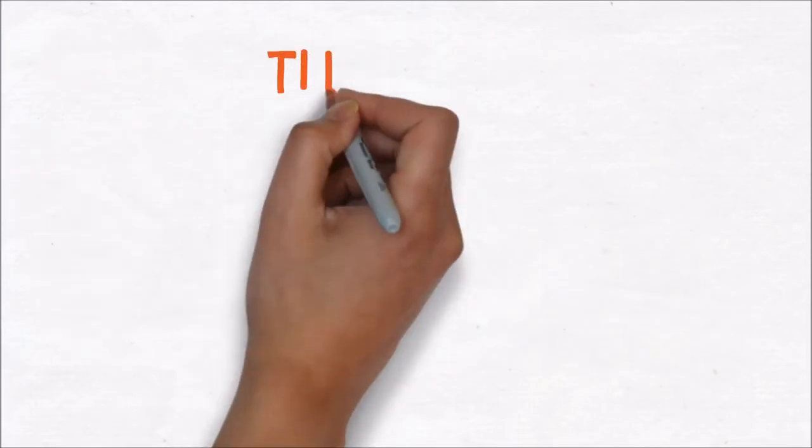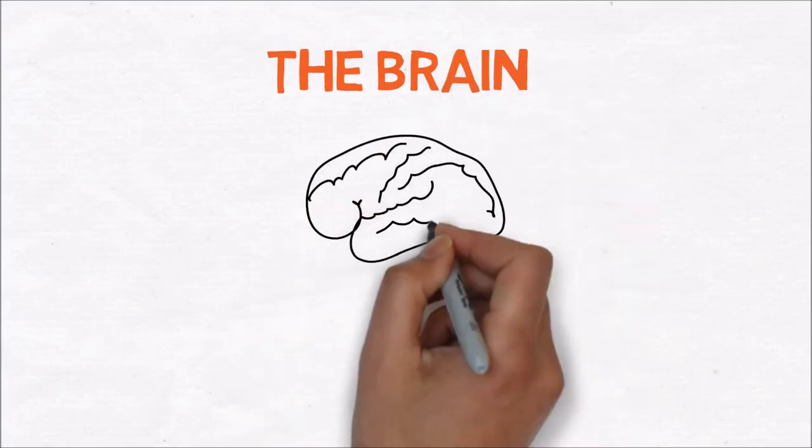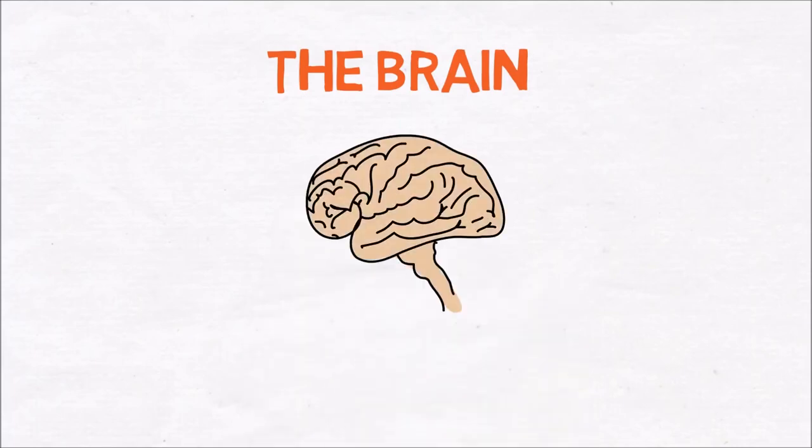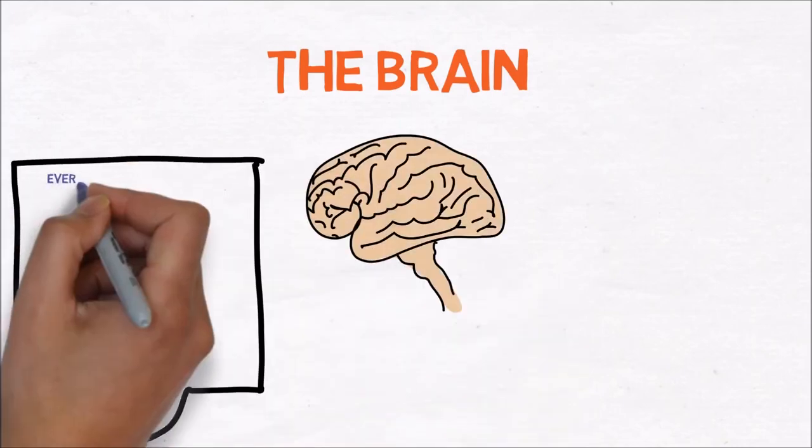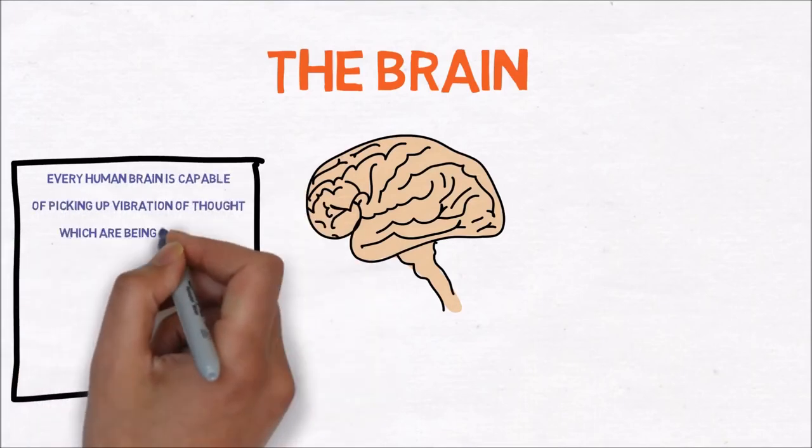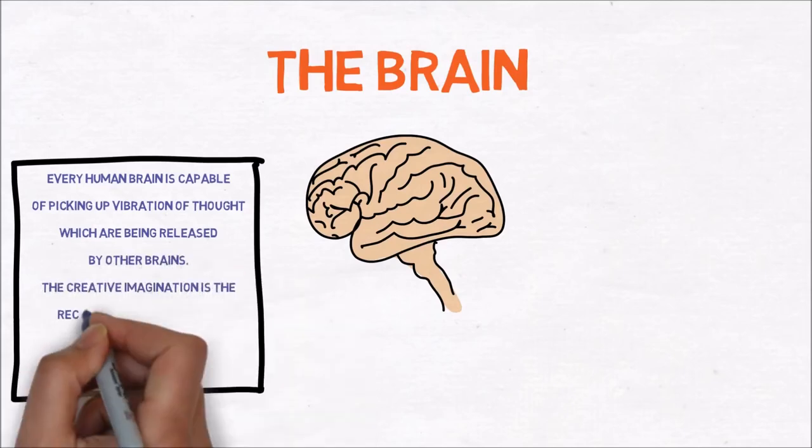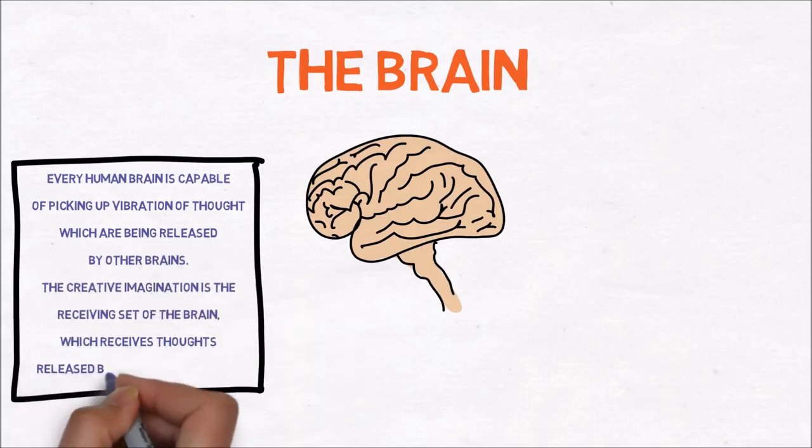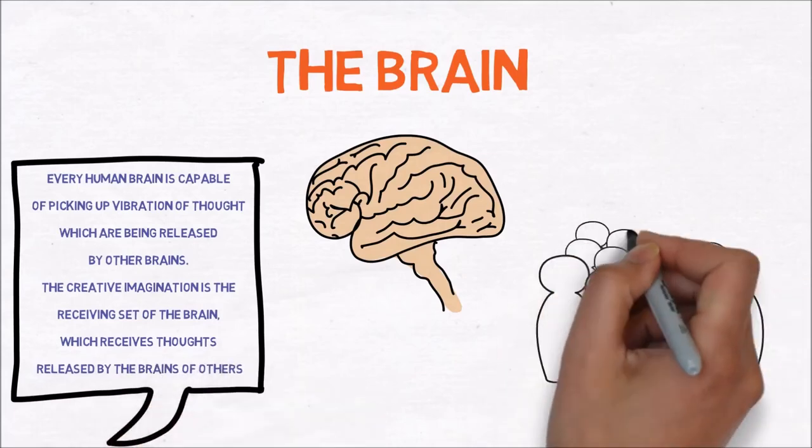The twelfth step is about the brain. According to Hill, every human brain is capable of picking up vibrations of thought which are being released by other brains. The creative imagination is a receiving set of the brain which receives thoughts released by the brains of others. Together with the mastermind principle you can use the members of the mastermind group to create amazing ideas or solve big problems.